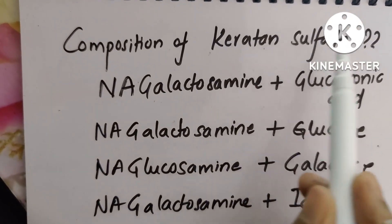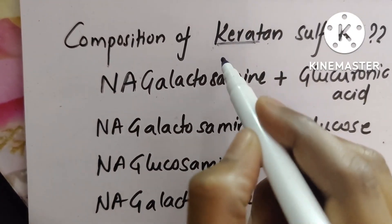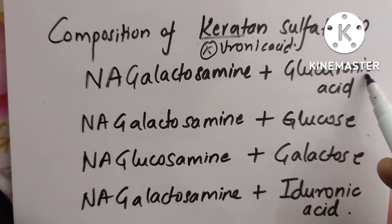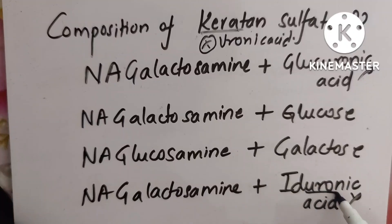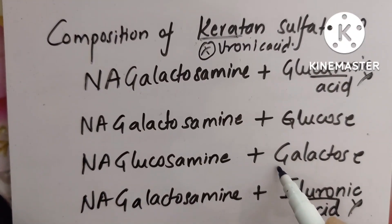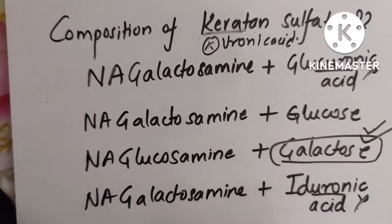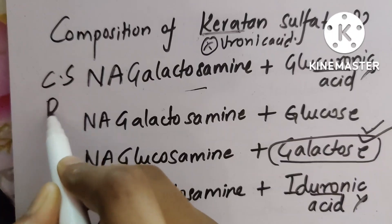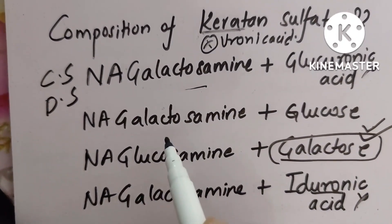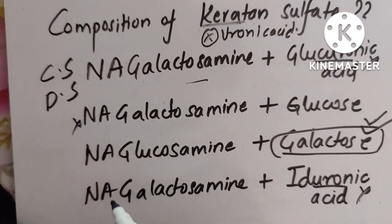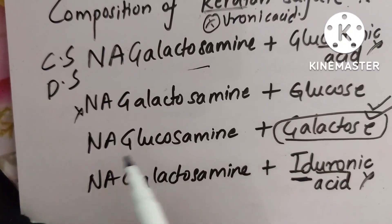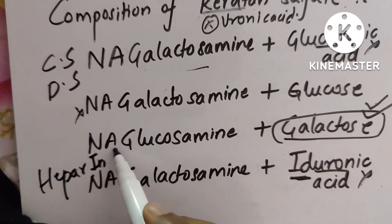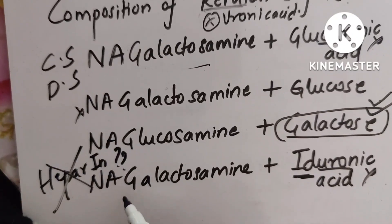Let us solve a question: what is the composition of keratan sulfate? First, remember keratan sulfate does not have uronic acid, so exclude any options that have uronic acid — that eliminates glucuronic acid in option one and iduronic acid in option four. Option two, galactosamine plus glucose, is not a real composition. Option three, N-acetyl glucosamine plus galactose, is keratan sulfate. Option one is chondroitin sulfate and dermatan sulfate. Option four has iduronic acid and galactose, but the heparin page should not have galactose, so that is not heparin.